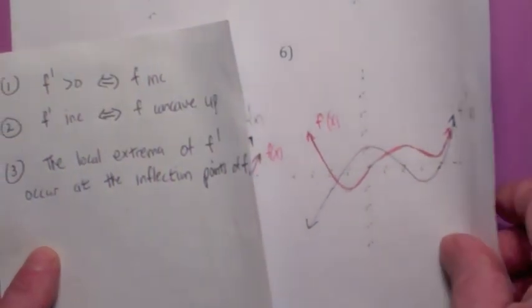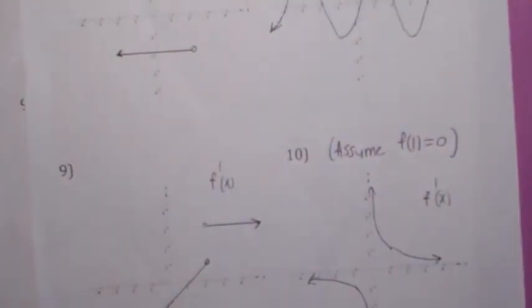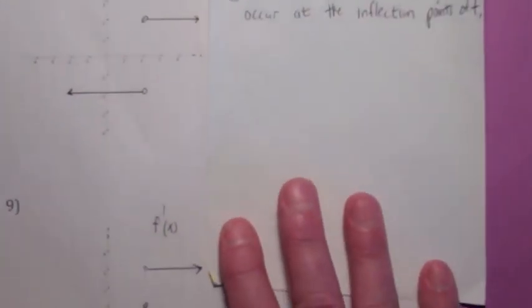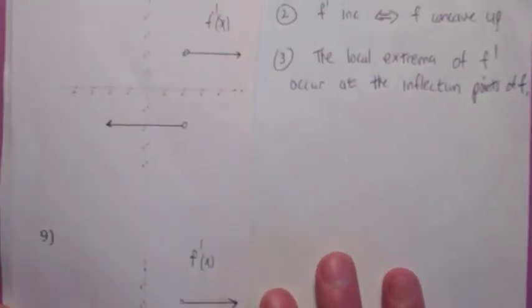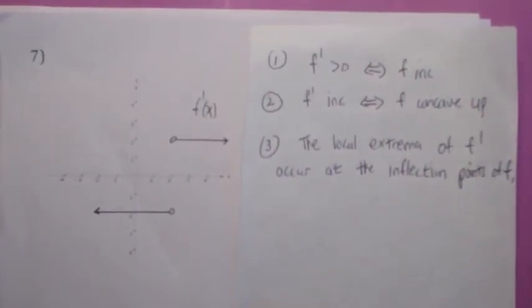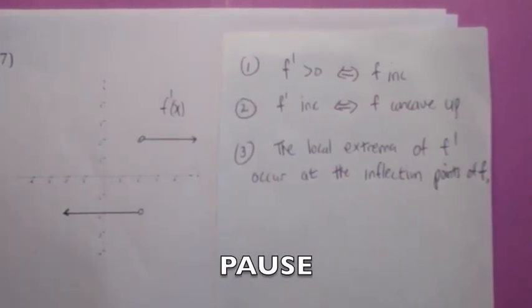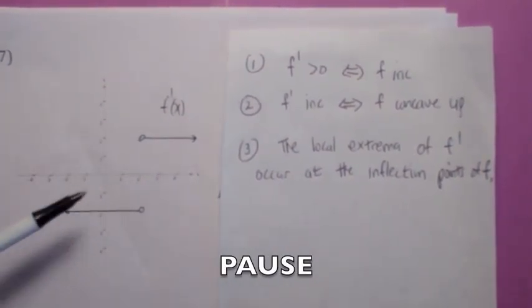Good. Okay, I've got time for a couple more, I think. How about, I've got time for two more, I think. Try this one, see if you can, number 7, see if you can sketch the graph of f. We're assuming f goes through 0, 0 and has this as its graph.